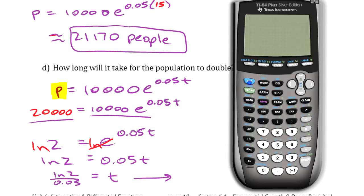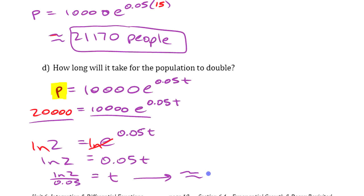On the calculator: ln(2), close the bracket, divided by 0.05 — that gives 13.86 years, roughly, growing at 5%.